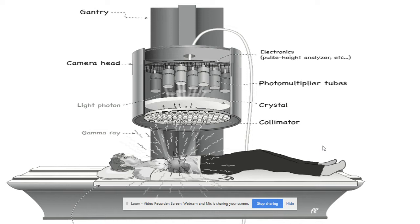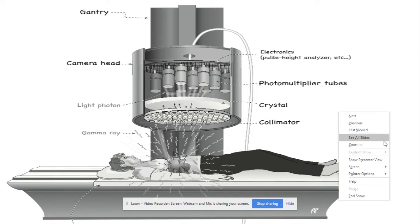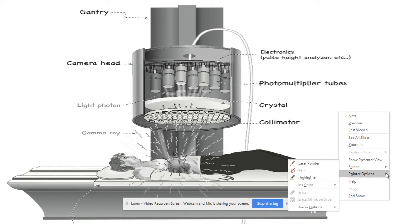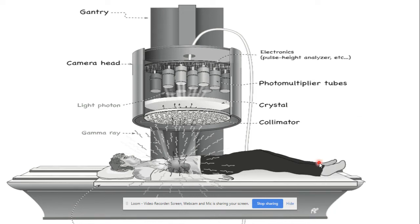There are many components of the gamma camera. The first component is the collimator, the next is the crystal, then the photomultiplier tube, and so on. After going through these different components, the camera converts these gamma radiations into a visible picture.